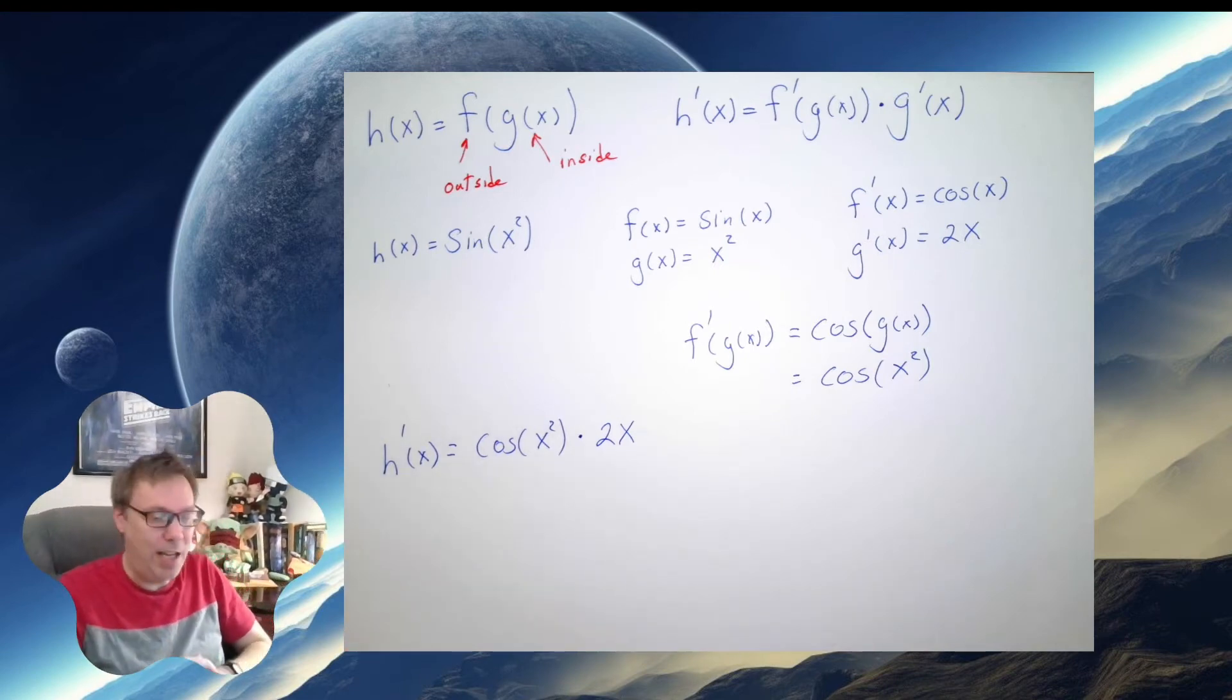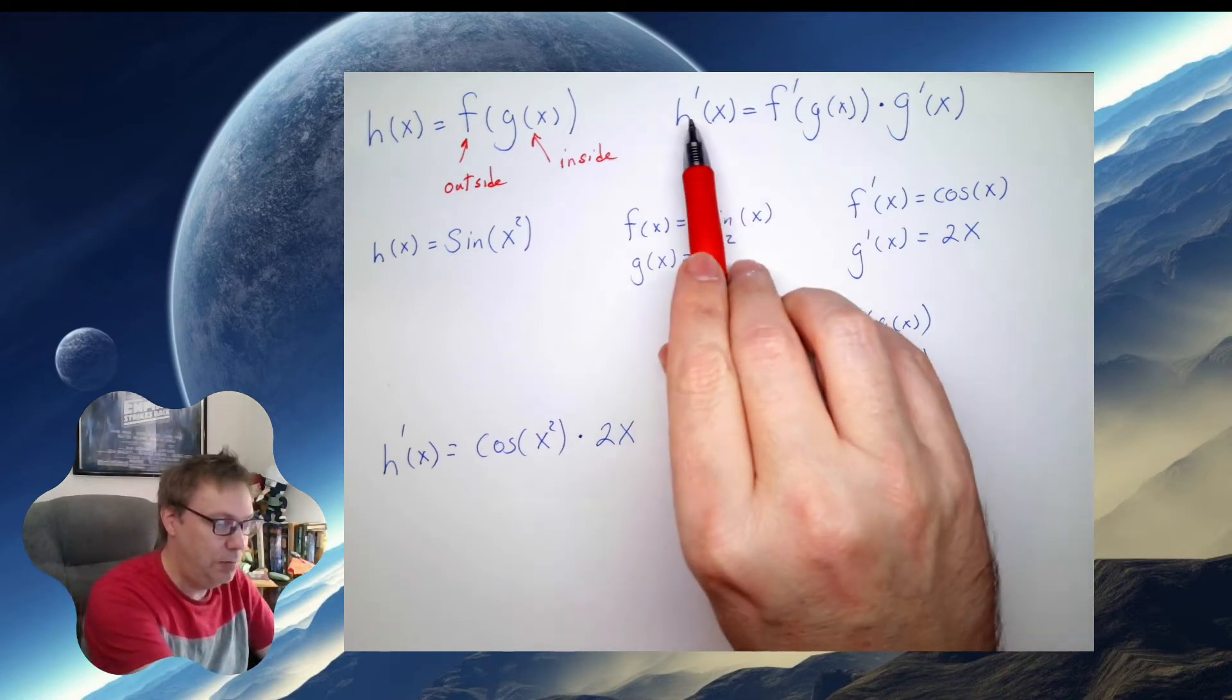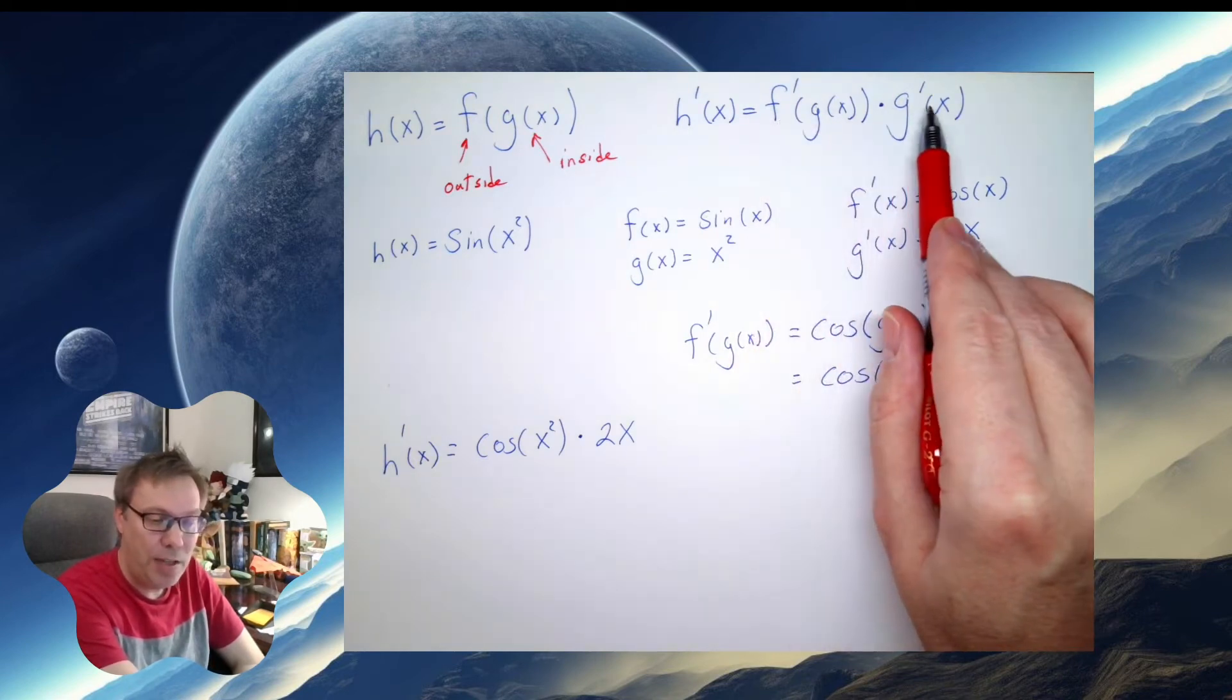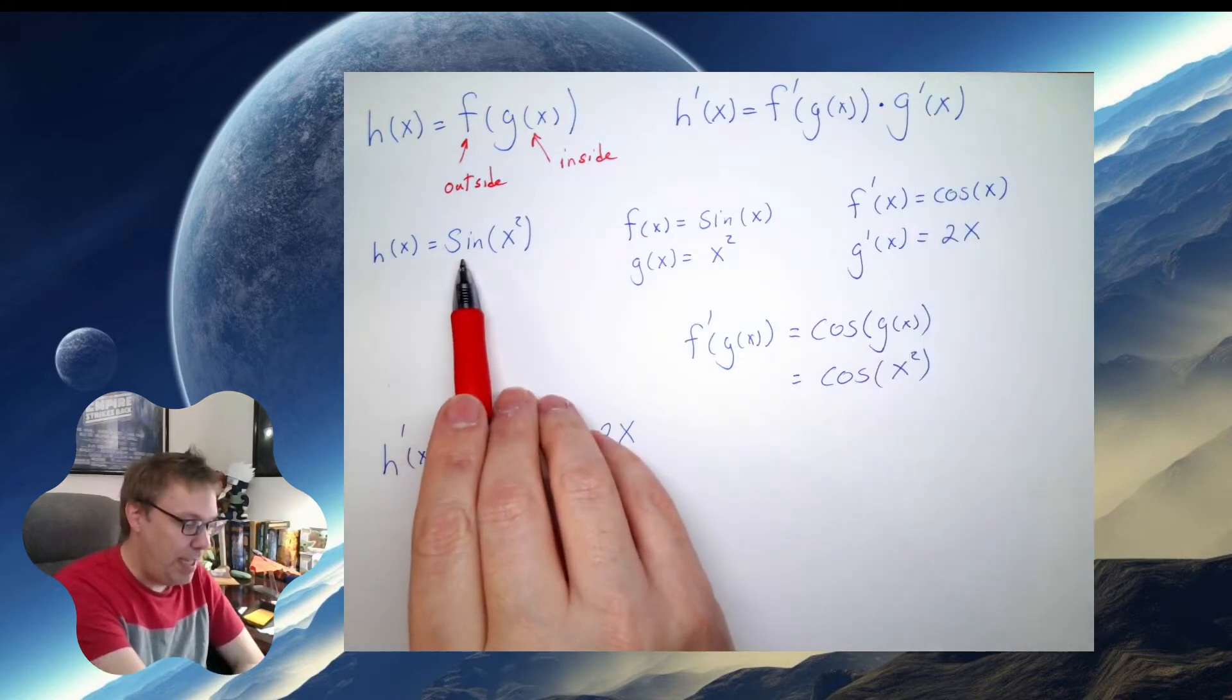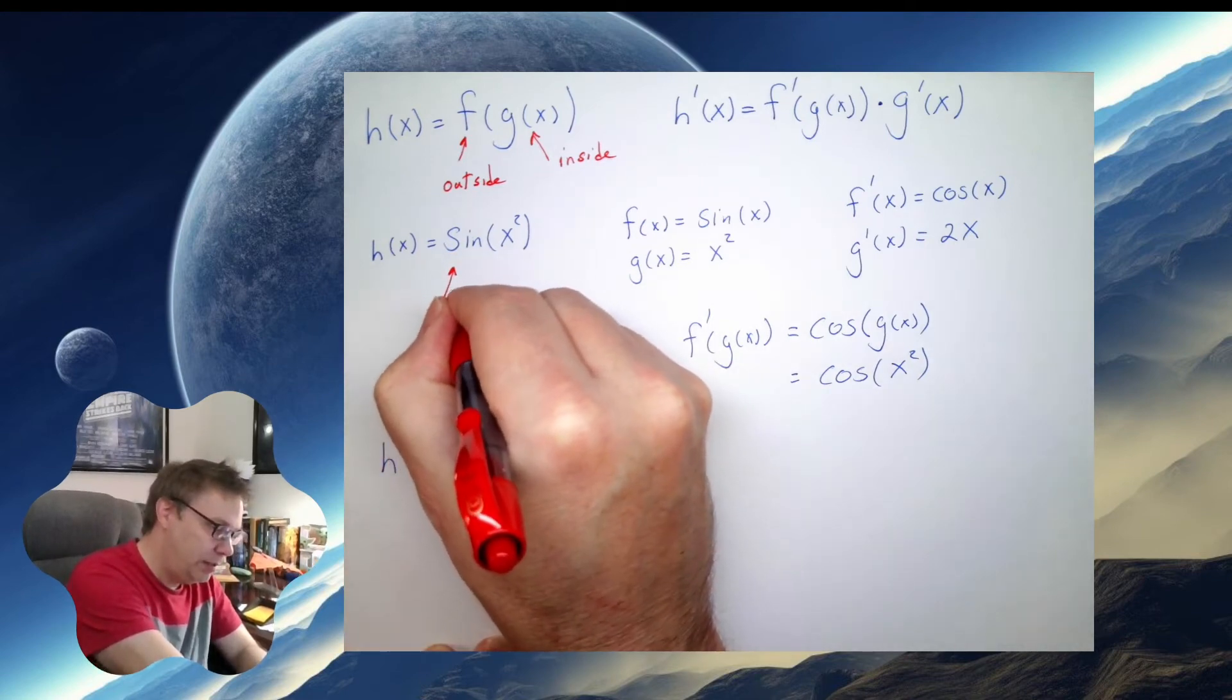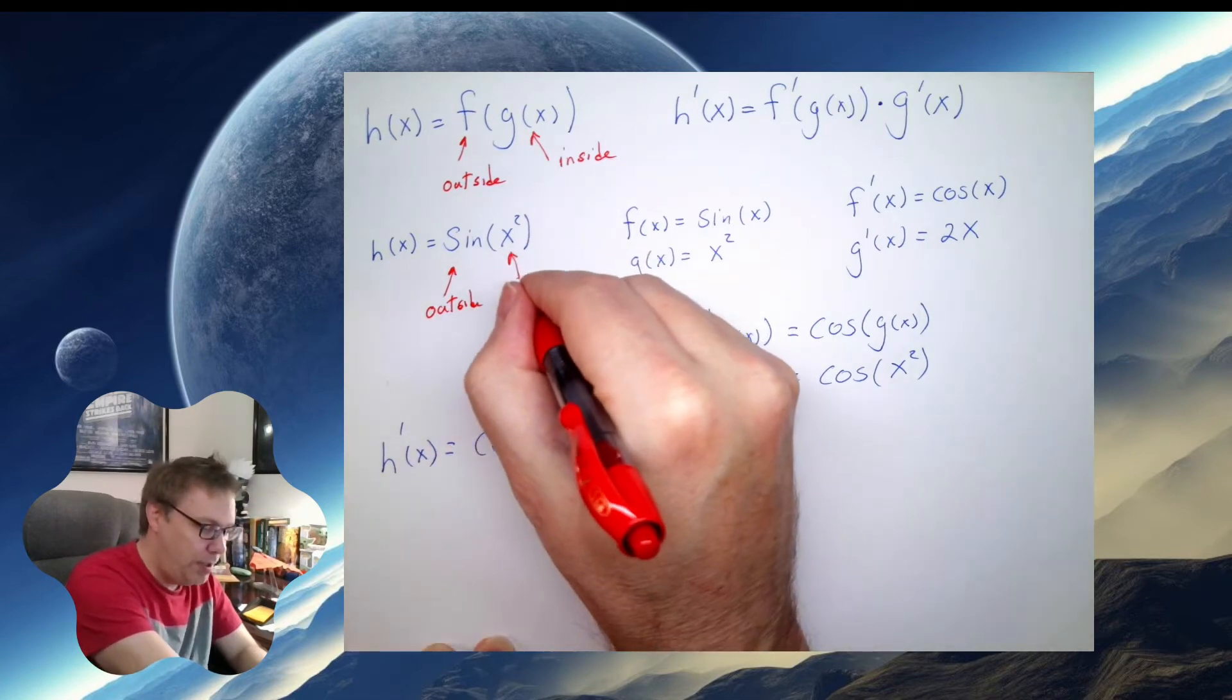So let's have a small recap here. When I take a derivative, take a derivative of the outside, leave the inside alone, and then multiply by the derivative of the inside. So when I'm looking at this sine, this is the outside. And this x squared, this is what I'm considering the inside.